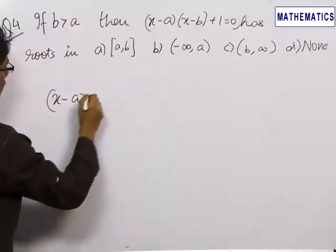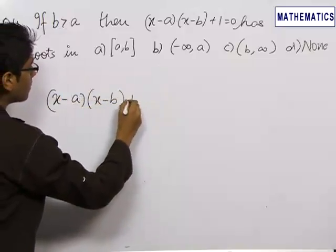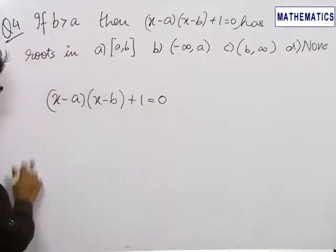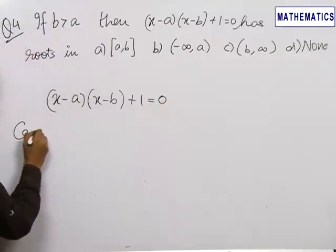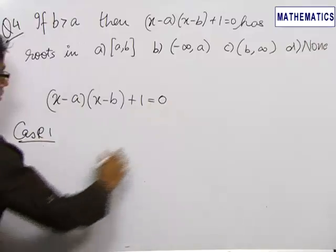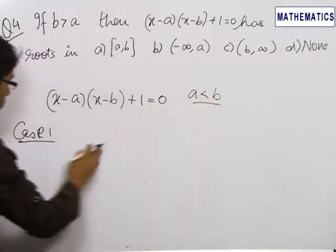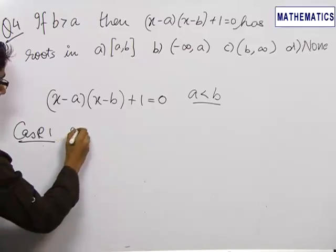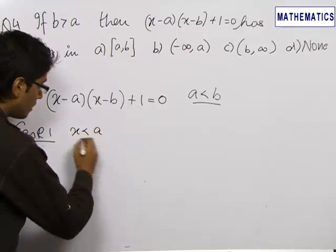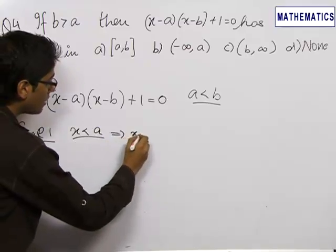The quadratic equation is x minus a into x minus b plus 1 equals 0. We know that a is less than b. Let us take Case 1 as x is less than a. Now, if x is less than a, then definitely x would also be less than b.